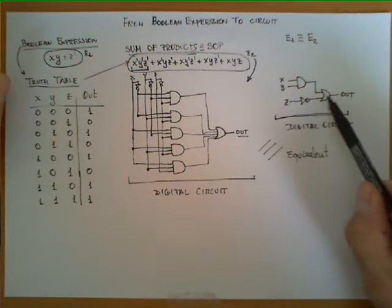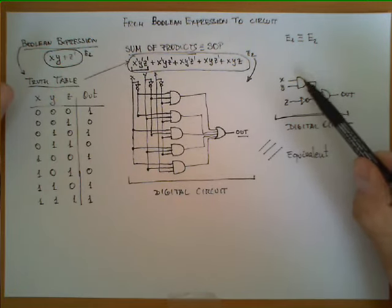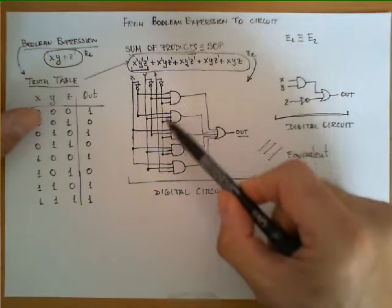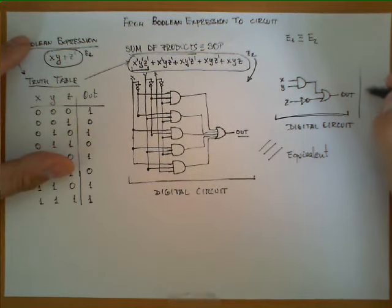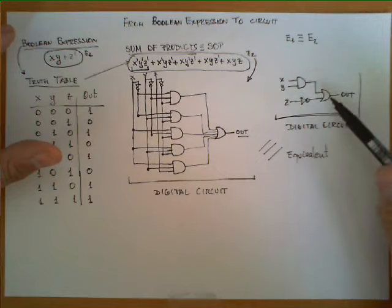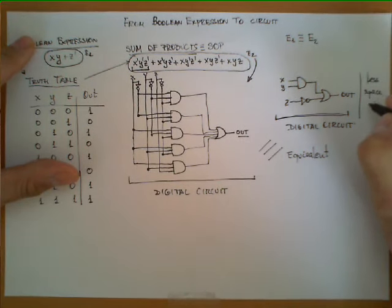Now if we take into account that these digital gates occupy a space in a chip and these digital gates sometimes are slower than others, especially those that have more than two inputs, then what we have is this circuit over here is preferred over this one because it occupies less space and probably is also faster.